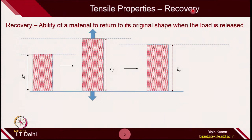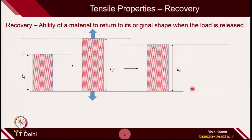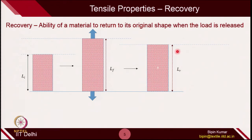The second property is recovery. Once you stretch the material, when you remove the load it will try to go back. Recovery is nothing but the material's ability to return to its original shape when the load is released. The original length is L-initial. After applying load the final length is L-final. Once you remove the load, the material tries to return to its original position, but in reality the material will permanently deform and will not go back to L-initial — it will only recover to L-r. Depending on how much we extended it and how much it recovered, we define the recovery parameter.